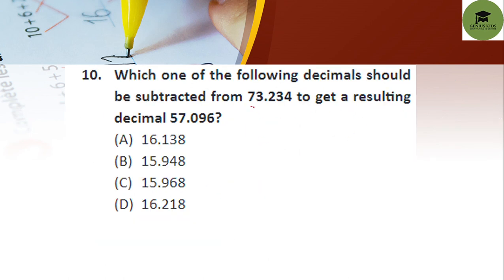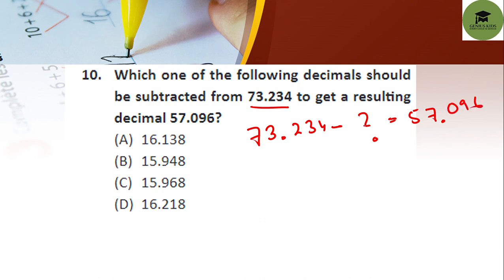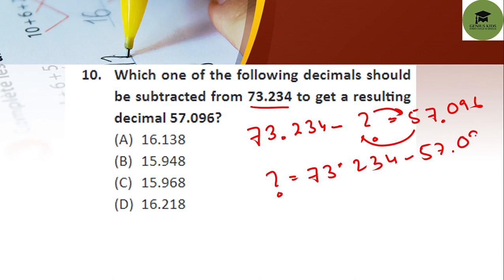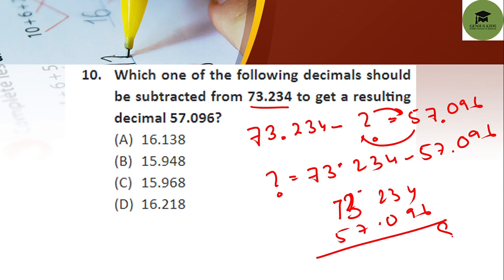Question 10: which decimal should be subtracted from 73.234 to get a resulting decimal of 57.096? The unknown = 73.234 − 57.096 = 16.138. Option A is your correct answer.